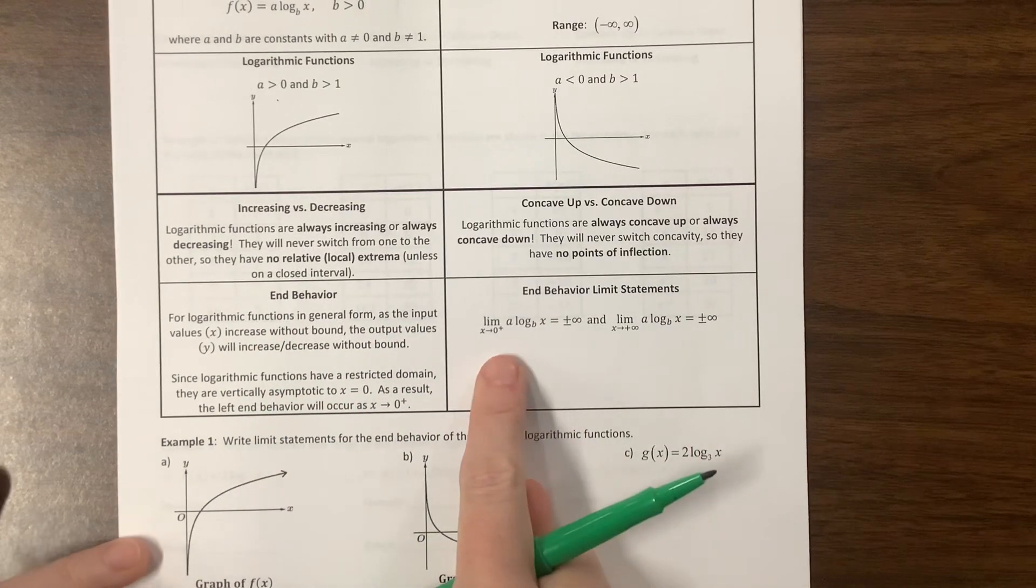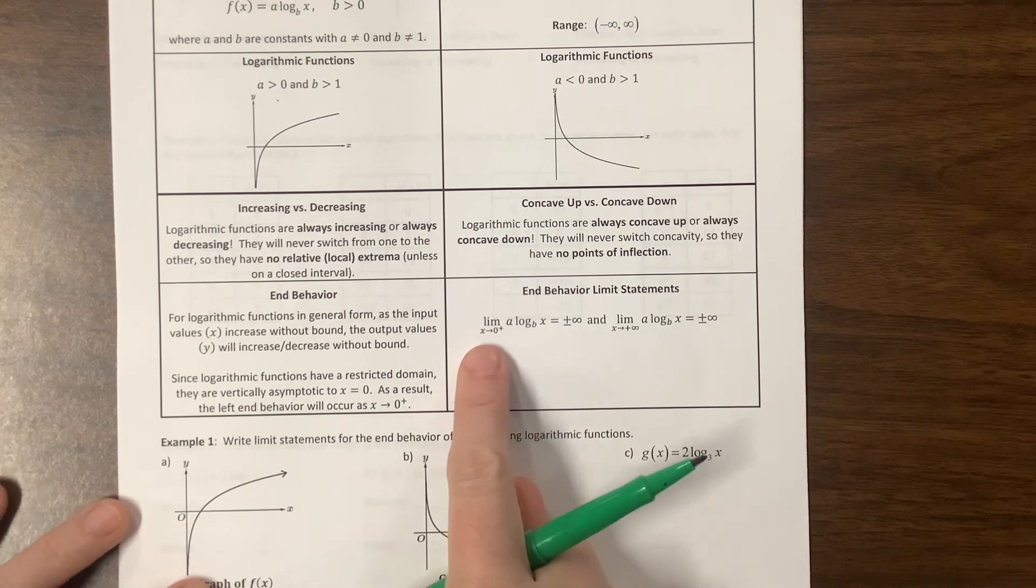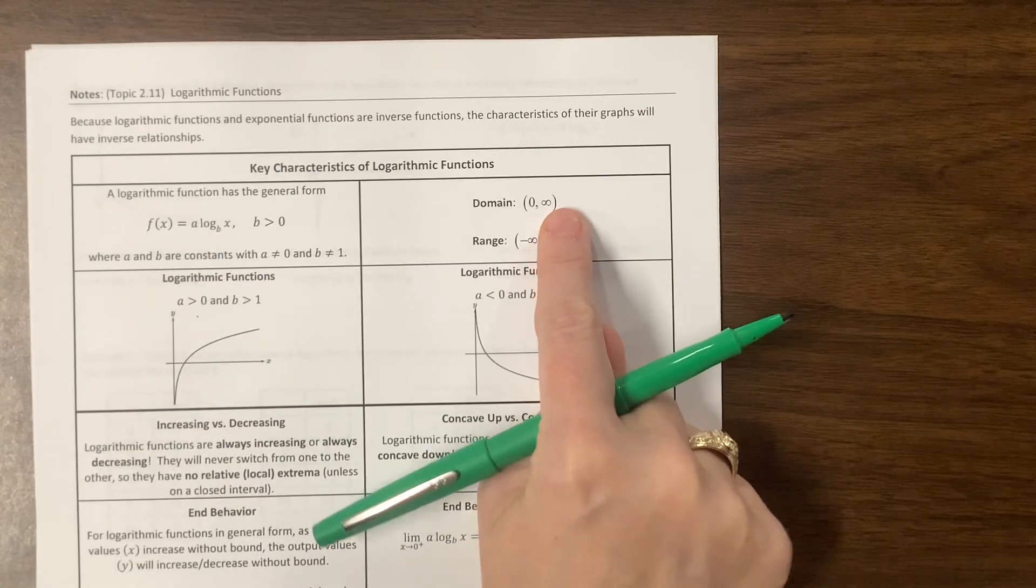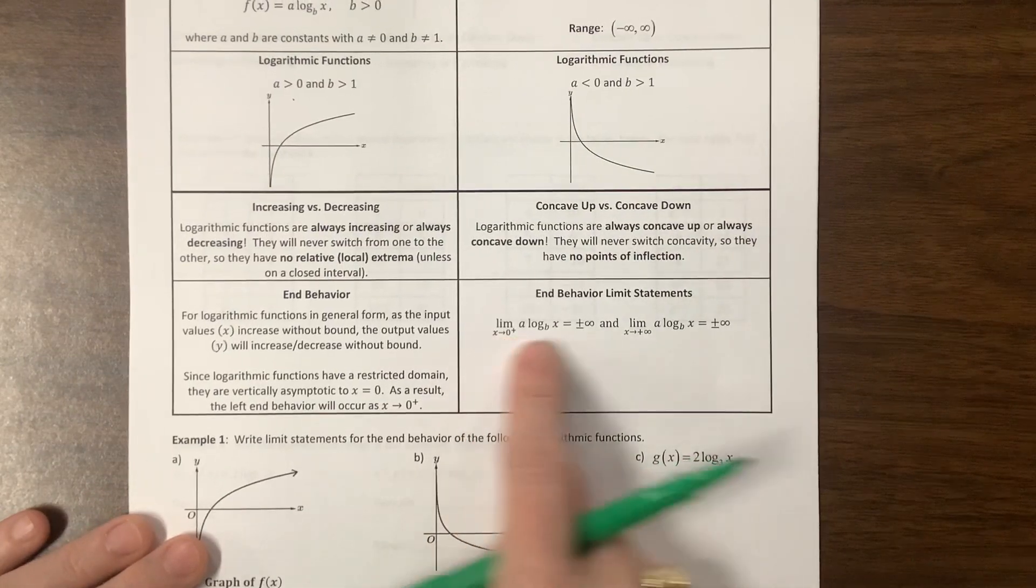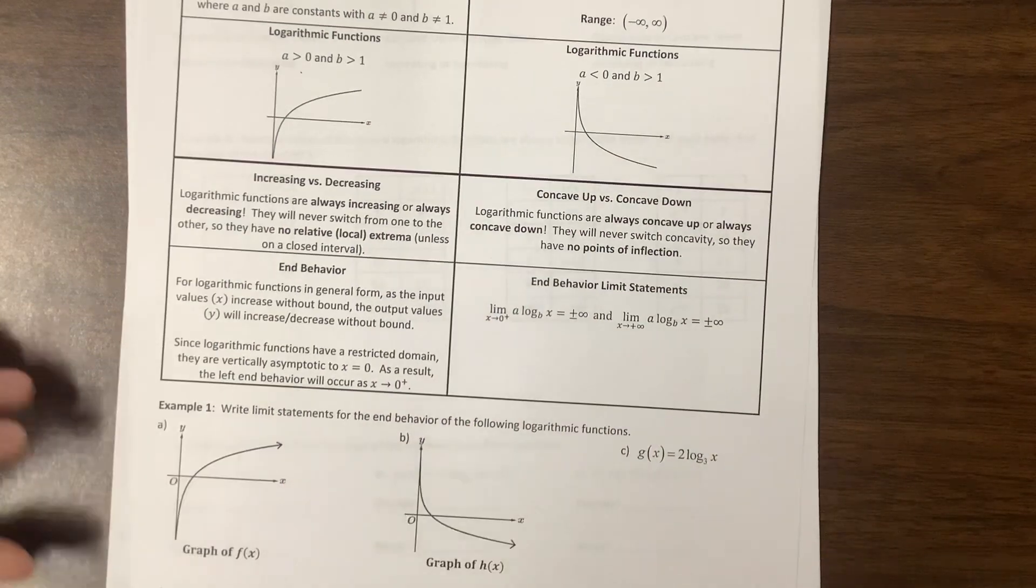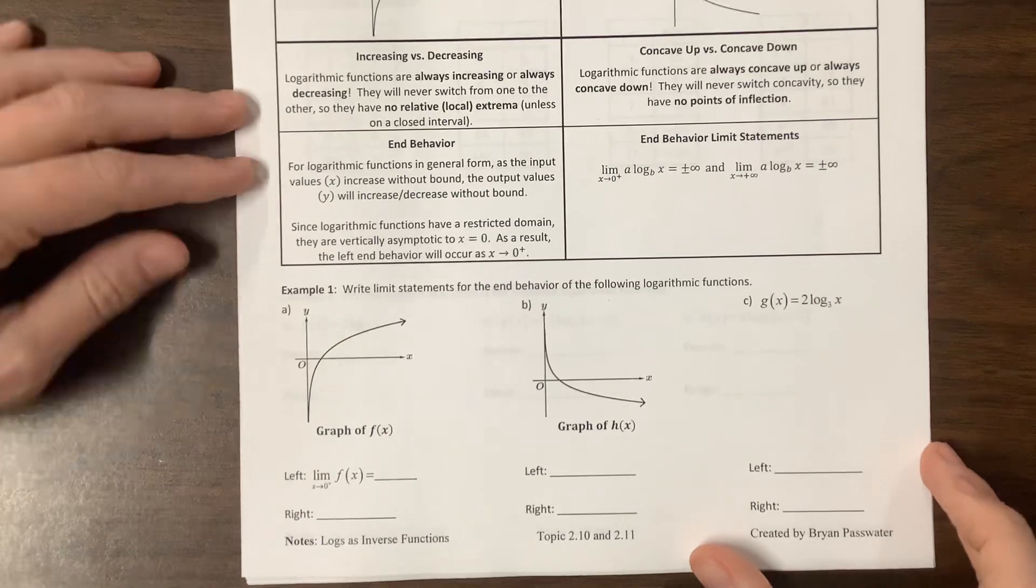So then we can talk about, when we talk about our limit behavior, we can no longer go to negative infinity because negative infinity is not in our domain. So we're going to come from, we're going to talk about going to zero from the right, and then going to positive infinity. Okay, so let's jump in and do a couple of them.